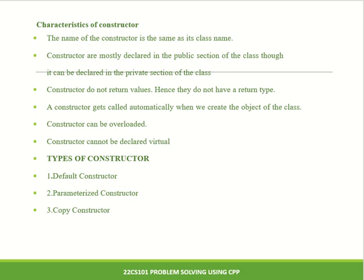The characteristics of a constructor are: the name of the constructor is the same as the class name; the constructor should be declared under the public section, because it is used throughout the program; the constructor does not return any values, so it should not have a return type; it is automatically called when an object is created — no need to call it like other functions; and the constructor can be overloaded, but it cannot be declared as a virtual type. There are three different types of constructors: default constructor, parameterized constructor, and copy constructor. Thank you.